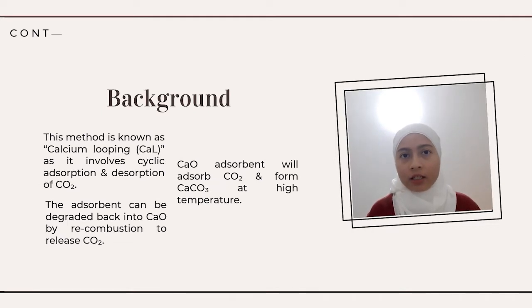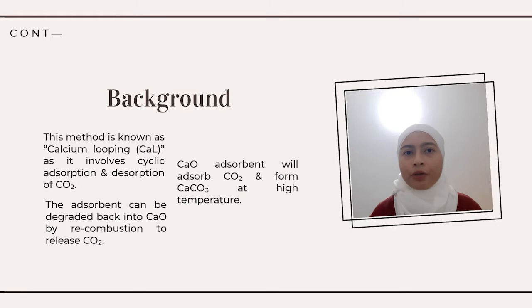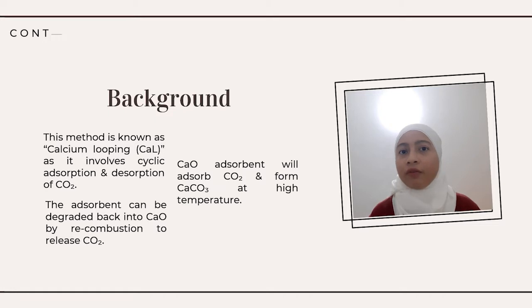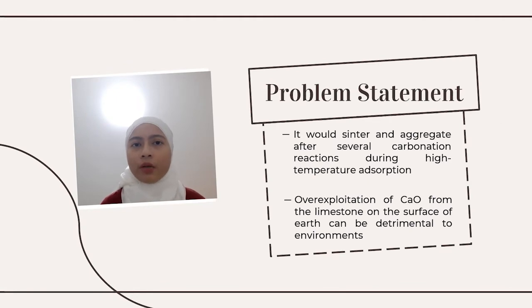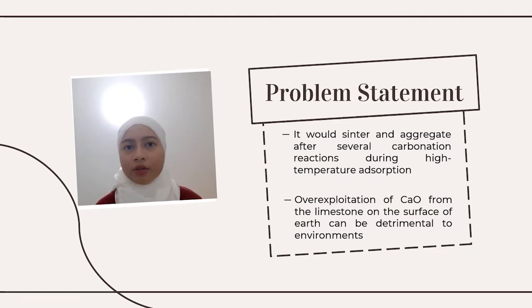Using this method, the calcium carbonate can be reduced back to calcium oxide by reheating at 900 degrees Celsius, thereby releasing carbon dioxide. This absorption and desorption of carbon dioxide is known as calcium looping technology. This method has the advantage of high selectivity and fast reaction rates and has been found suitable for carbon dioxide capture after high temperature combustion. However, the major problem is that after several carbonation reactions at high temperature, the absorbent has a tendency to sinter and aggregate, reducing its surface area and carbon dioxide absorption capacity.